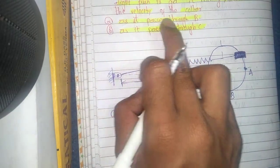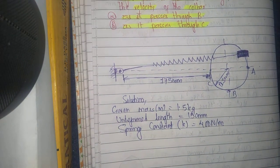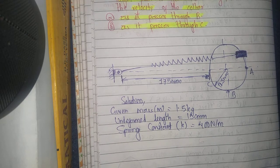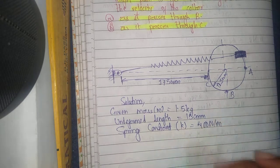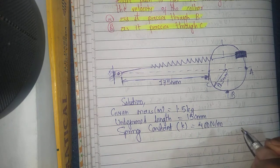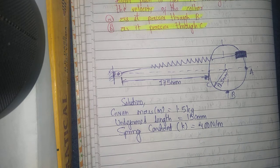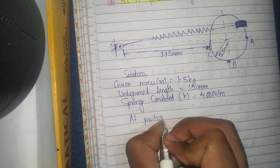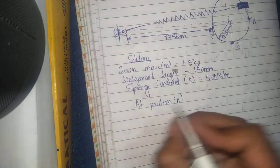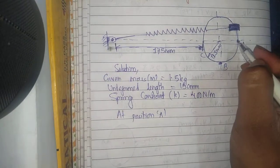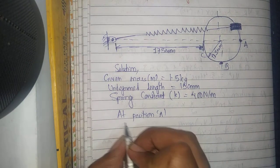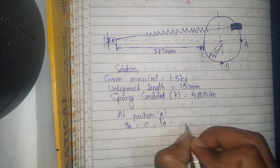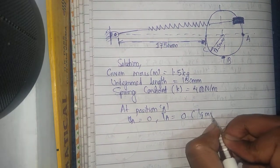To find the velocity using conservation of energy, we first find kinetic energy and potential energy at position A, and similarly at positions B and C. At position A, the collar is in equilibrium, meaning it is at rest. So velocity at A equals zero, and therefore kinetic energy at A equals zero.